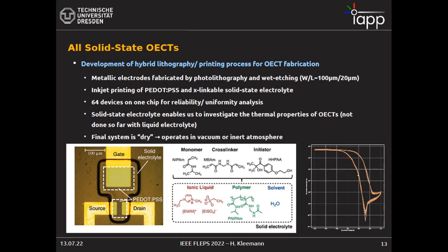Luckily, we have a solid-state electrolyte system that even works in a cryogenic environment. We pattern the gate electrode and source/drain by photolithography, print the PEDOT:PSS by inkjet, and print a solid-state electrolyte on top and cross-link it with UV radiation. It's a perfectly dry system that can be operated in vacuum and allows us to vary temperature from −60 to +100°C. We've measured devices encapsulated this way for more than four weeks in loops and they remain perfectly stable.